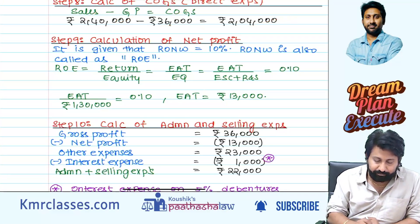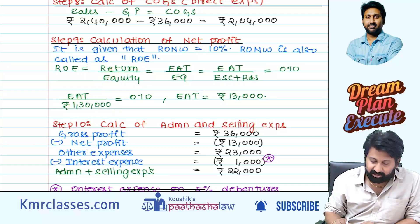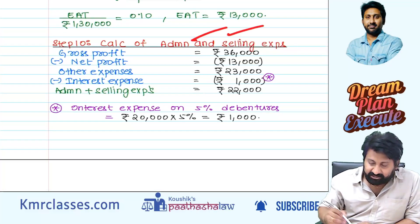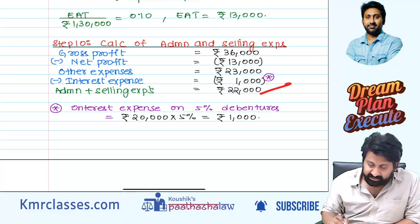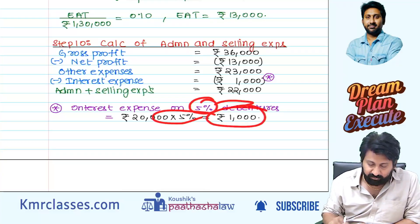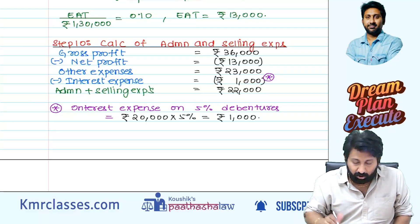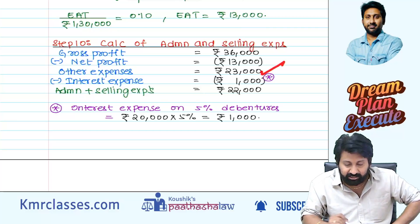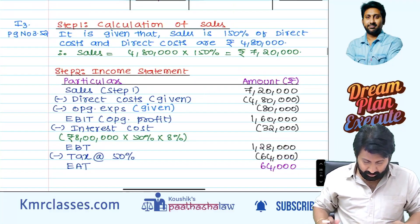Gross profit is 15% of sales = 36,000. Cost of goods sold = sales minus GP. For net profit calculation: return on equity is given — return (PAT) divided by equity (net worth = 1,30,000) = 13,000. For administration and selling expenses: gross profit 36,000 minus net profit 13,000 = 23,000 other expenses, of which interest expense (5% on debentures) = 1,000. So administration and selling expenses = 22,000.